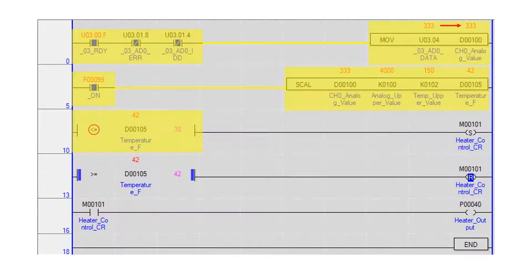Using a less than or equal to compare instruction, the current temperature is compared to a set point of 38. If the temperature is at or below 38 degrees, the internal bit heater control CR is set.